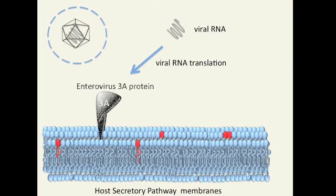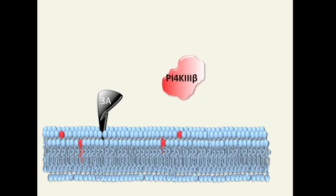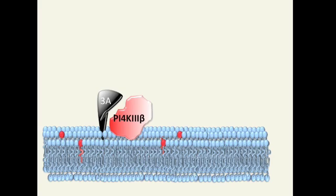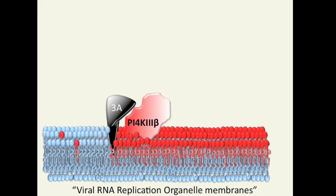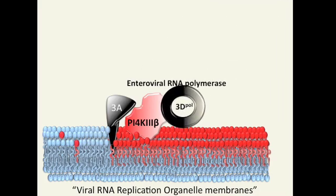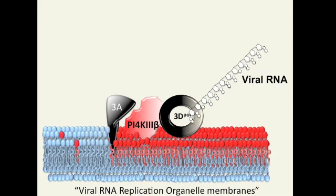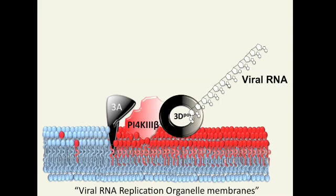When poliovirus or Coxsackievirus infects a host cell, its RNA is released into the cytoplasm. There, the viral RNA is translated into structural proteins and replication proteins. One of the viral replication proteins, the 3A protein, is a tail-anchored membrane protein which inserts itself into the membranes of the host's secretory pathway. We discovered that 3A selectively enhances the recruitment of a host lipid-modifying enzyme, PI4 kinase 3 beta, to these membranes. Once recruited, PI4 kinase 3 beta catalyses the synthesis of PI4p lipids at these membranes. We also found that the soluble viral RNA-dependent RNA polymerase selectively binds PI4p lipids, and these membranes then become sites for the assembly and activity of viral replication enzymes and the synthesis of viral RNA. Thus, these viruses design their own specific membrane platforms enriched in PI4p lipids to facilitate their replication.